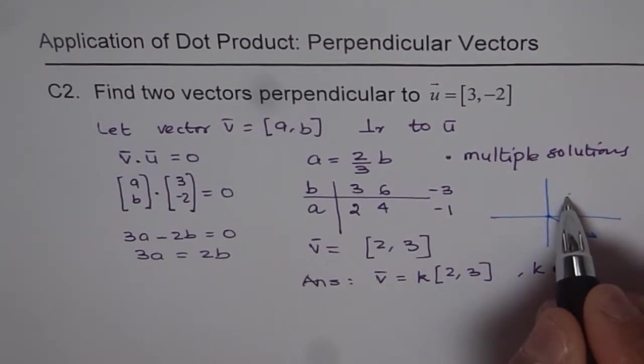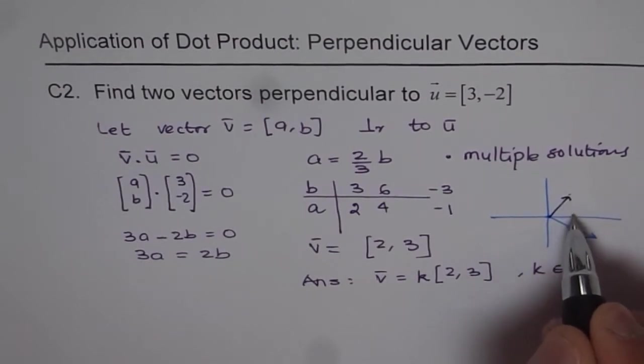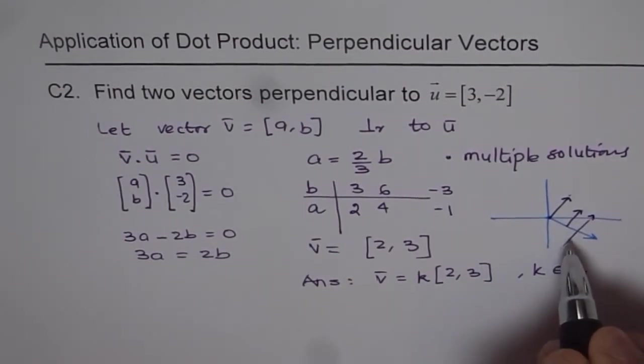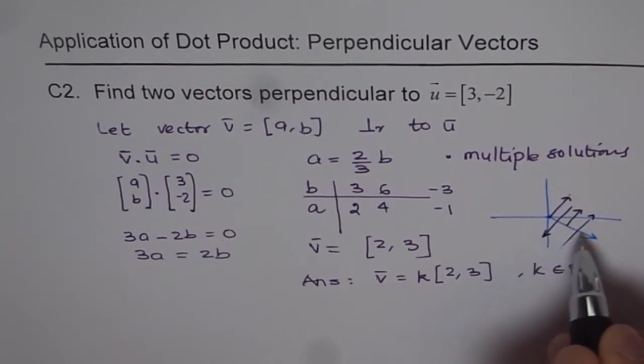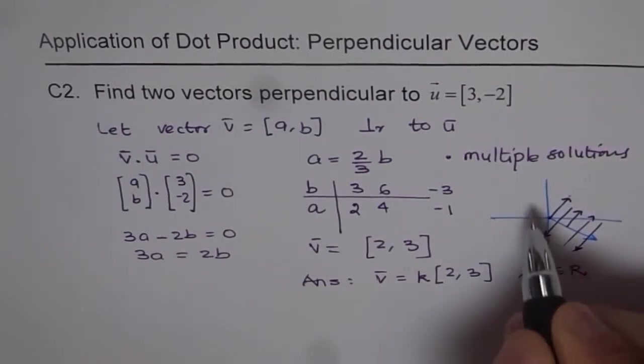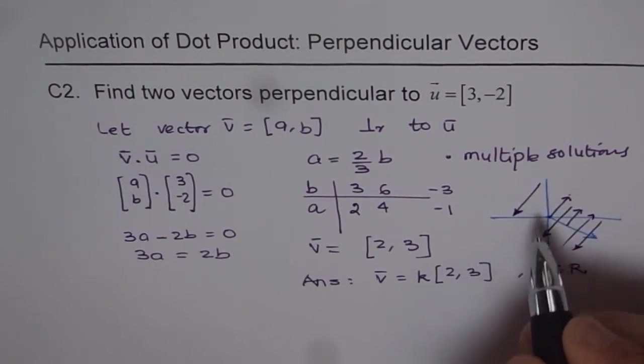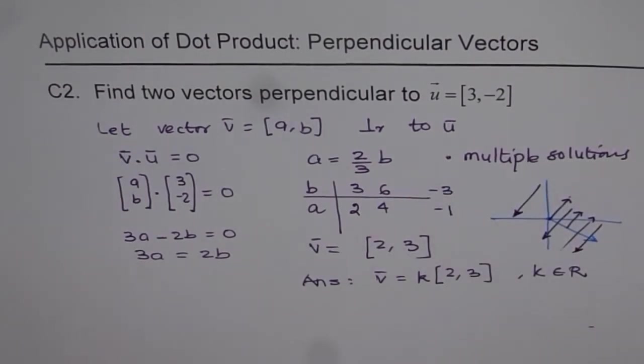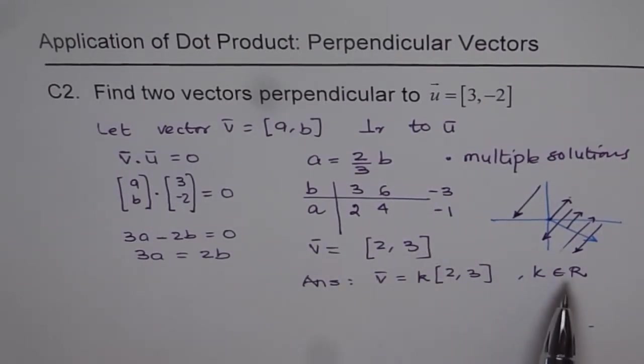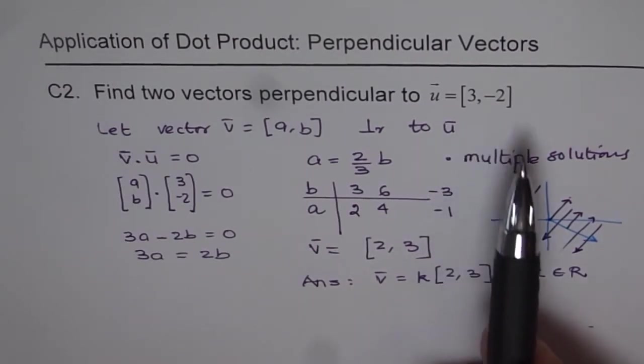If you have any vector in this direction, it could be here, there, it could be longer, shorter, it could be in this direction, any direction. Anywhere. But in this direction will be perpendicular to the given vector. You can have n number of vectors perpendicular to a given vector.